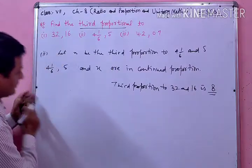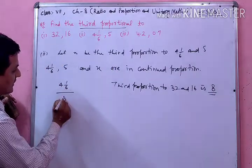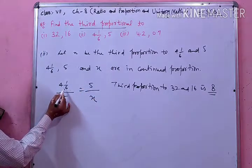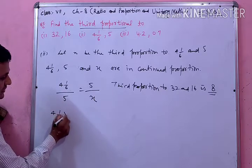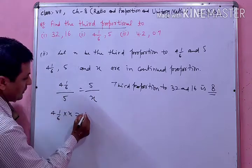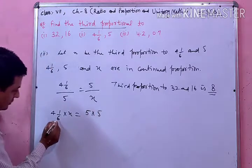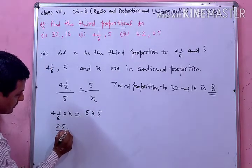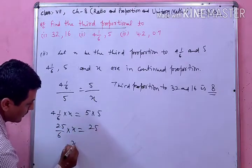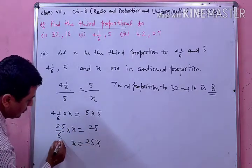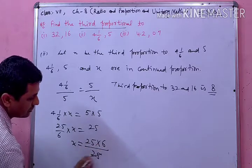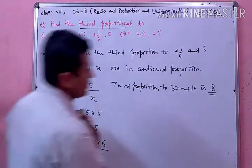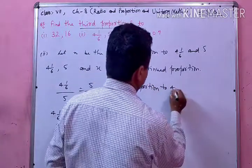तो हमारे पास first क्या है: 4 and 1/6 upon second equal होगा second upon third. तो इसको cross multiply करेंगे — 4 and 1/6 multiply x is equal to 5 की 5 से multiply। तो 24 plus 1 upon 6, यानी 25 upon 6 multiply with x is equal to 25. अब x की value find करनी है तो divide में जो है वो multiply हो जाएगा, यह दोनों cut होंगे। तो x की value आ जाएगी 6.